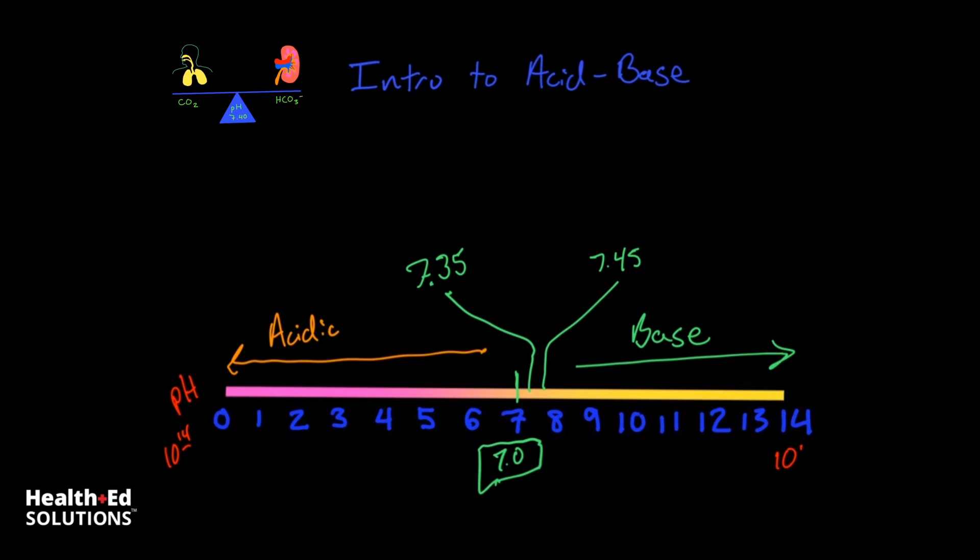An acid is something that donates hydrogen ions, and therefore makes the solution more acidic. And a base actually accepts hydrogen ions, so it decreases the hydrogen ion concentration in a solution. So a base actually increases the pH of a solution.